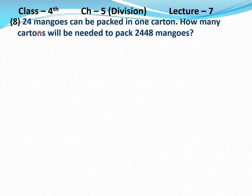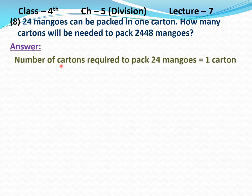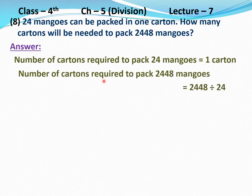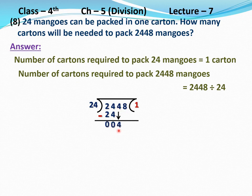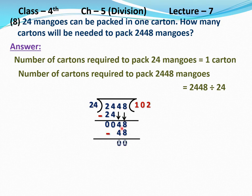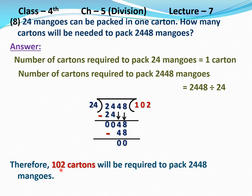Question number 8: 24 mangoes can be packed in one carton. How many cartons will be needed to pack 2,448 mangoes? Answer: Number of cartons required to pack 24 mangoes equals 1 carton. Number of cartons required to pack 2,448 mangoes equals 2,448 divided by 24. Divide 2,448 by 24. 24 multiplied by 1 equals 24; subtraction: 4 minus 4 is 0, 2 minus 2 is 0. Take next number, 4; but 4 is less than 24, so take one more number, 8, and write 0 in the quotient. Number formed is 48. 24 multiplied by 2 equals 48; subtraction: 8 minus 8 is 0, 4 minus 4 is 0. Therefore, 102 cartons will be required to pack 2,448 mangoes. Clear?